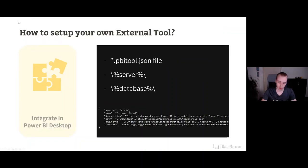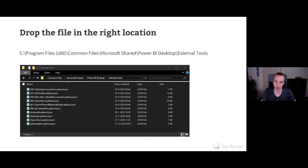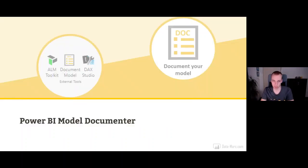You need to drop this file in that specific location — the same for every computer — and that location requires admin permissions. Therefore, as I mentioned, you can use the Business Ops tool, downloadable from PowerBITips.com, to install these tools more easily without having to manually edit all these JSON files. Now let's have a look at the Model Documenter — how I built this tool and what it's actually doing under the hood.